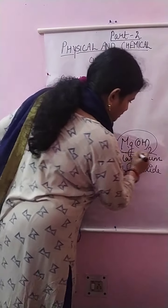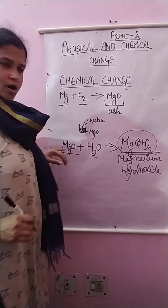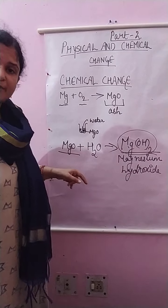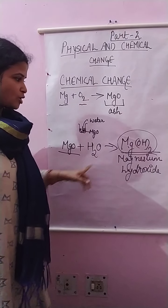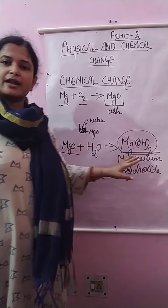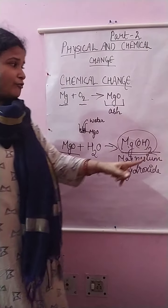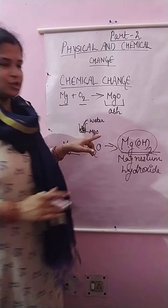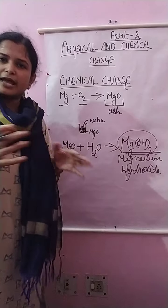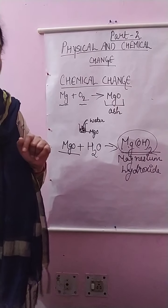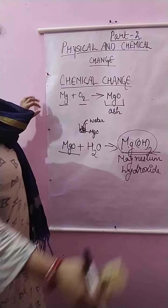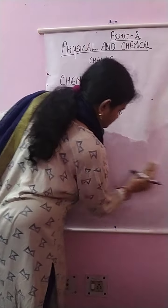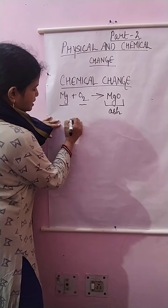Its property is different from magnesium oxide, so this is again a chemical change. Now we have to check whether when we add water to magnesium oxide, is the product an acid or a base? We can check it by using an indicator.